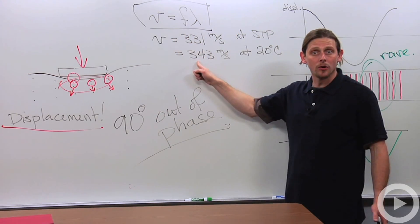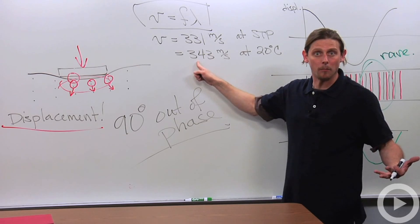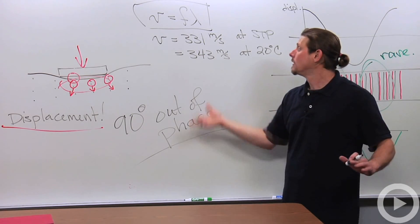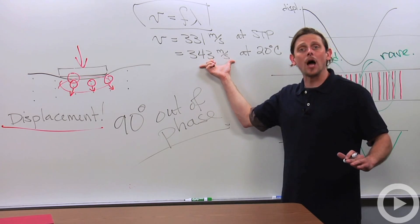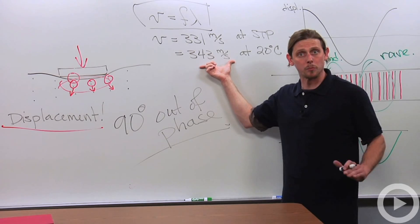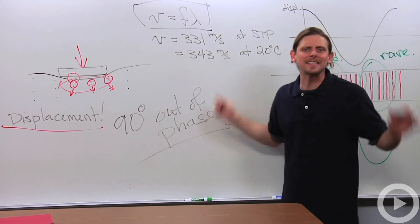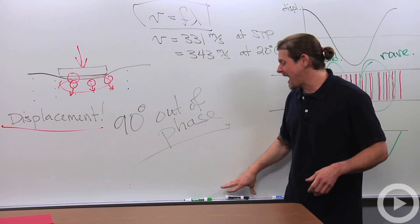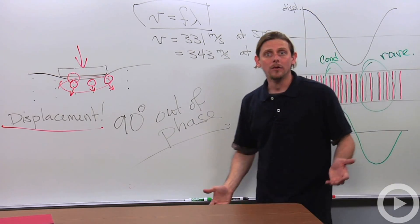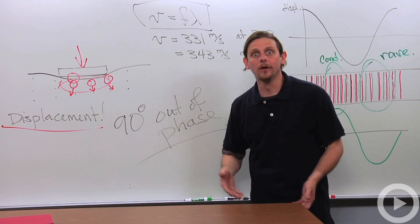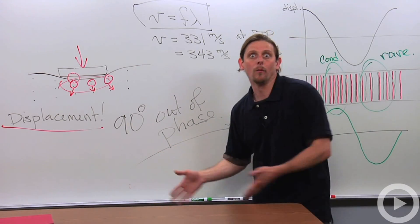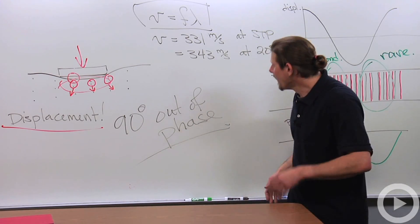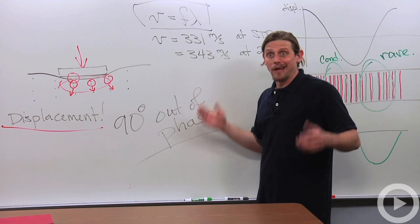At 20 degrees Celsius, which is more like room temperature, again one atmosphere pressure, the speed of sound is 343 meters per second. Most of the time in these problems they'll give you a temperature and a frequency and ask for the wavelength, or vice versa. And that's sound waves.